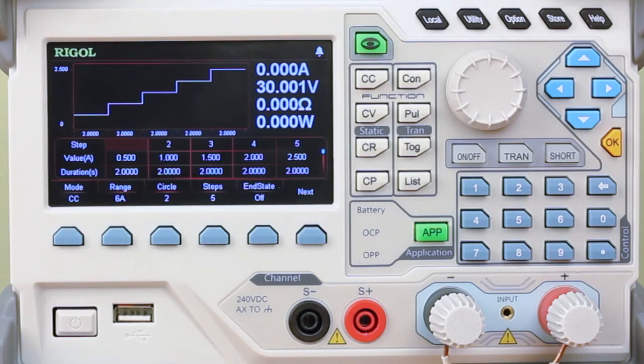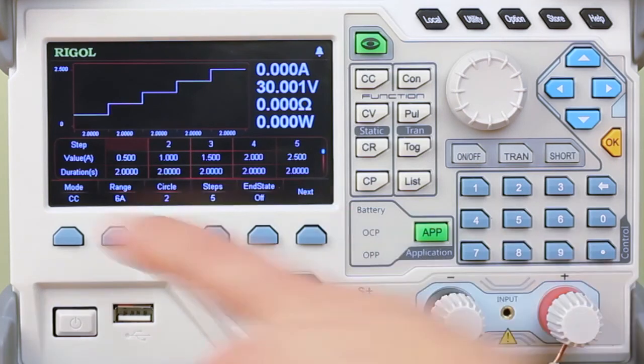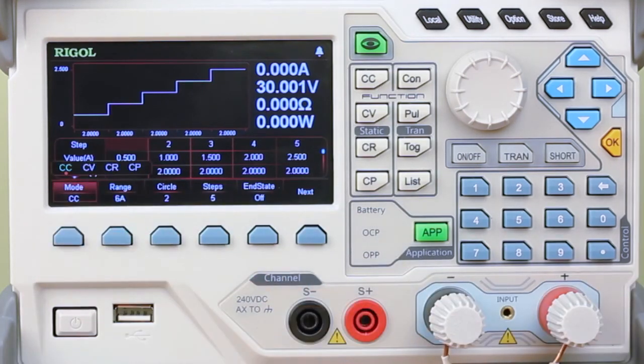And you can set hundreds of steps and hundreds of cycles to maximize the kind of list you need to do. You can also do this list in constant voltage, constant resistance, or constant power modes.